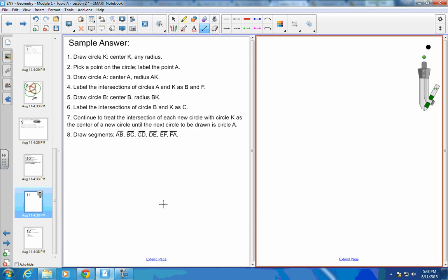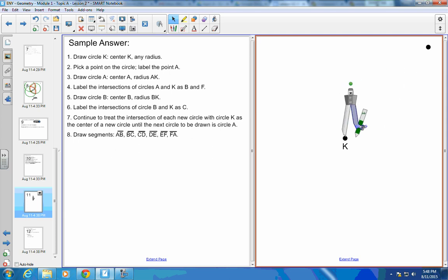Here are my answers for the hexagon. I'll walk you through that. Draw circle K centered at K. So let me grab point K. There's my point K. And I can make it any radius I want. I'm going to make it kind of small so this all fits on a page. So there's circle K. Pick a point on a circle and label it A. So there is a point on my circle and I have labeled it A. Draw circle A with the same radius or the radius AK. So there is circle A.